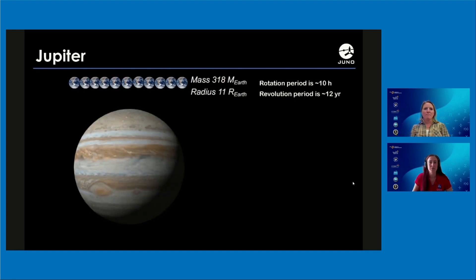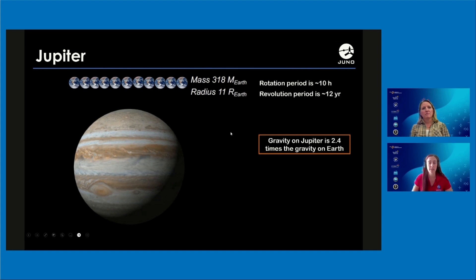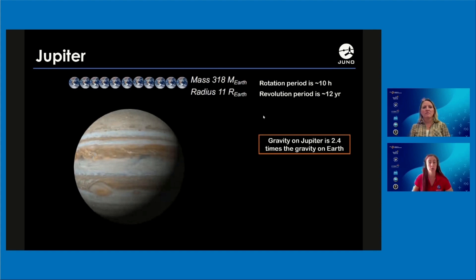The mass of Jupiter is 318 times the mass of Earth, and its radius is 11 times the radius of Earth. This mass and radius translate to gravity: on Jupiter it's 2.4 times the gravity on Earth. This comparison really teaches us these proportions between mass, radius, and gravity. Interestingly, this difference in size also relates to rotation period — on Earth a day lasts 24 hours, but on Jupiter, even though it's much larger, a day is only about 10 hours.